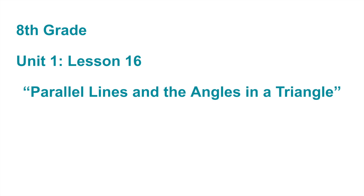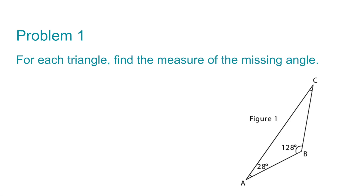Eighth grade, Unit 1, Lesson 16: Parallel Lines and the Angles in a Triangle. Number 1. For each triangle, find the measure of the missing angle.